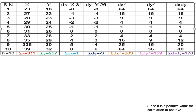To summarize all computed values: n = 10, sigma x = 311, sigma y = 257, sigma dx = plus 1, sigma dy = minus 3, sigma dx² = 203, sigma dy² = 159, sigma dx·dy = 178. Now we substitute these into the Karl Pearson correlation formula.